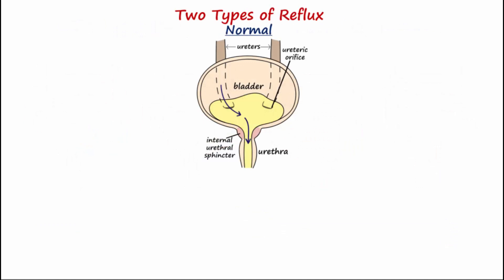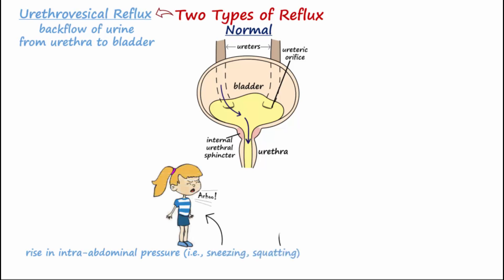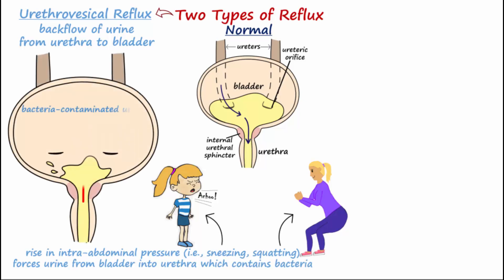Two types of reflux cause urine to flow the wrong direction, increasing the risk for UTI. Urethro-vesicle reflux may occur when there is a transient rise in intra-abdominal pressure, as with sneezing or squatting. This forces urine out of the bladder and into the urethra, which contains bacteria. When the intra-abdominal pressure is relieved, the now bacteria-contaminated urine refluxes back into the bladder, where it can seed the bladder with bacteria for infection.